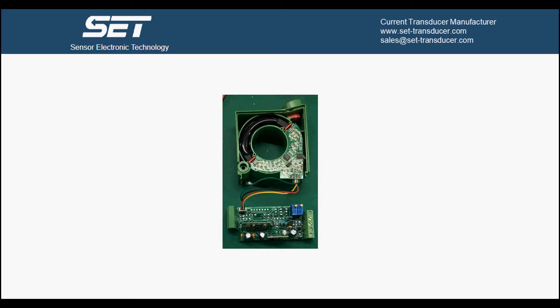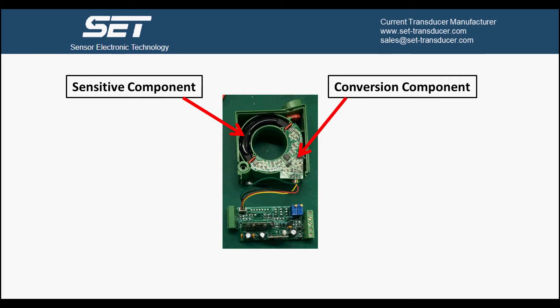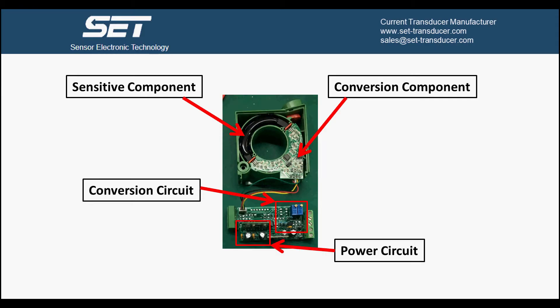Basically, current transducer is formed by four parts: sensitive component, conversion component, conversion circuit, and power circuit.